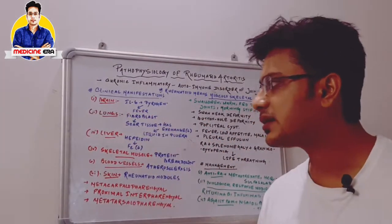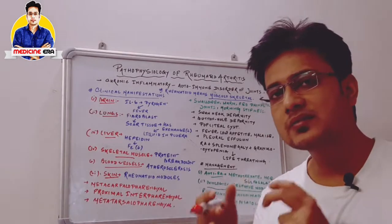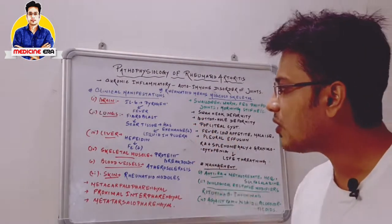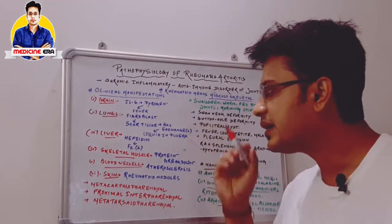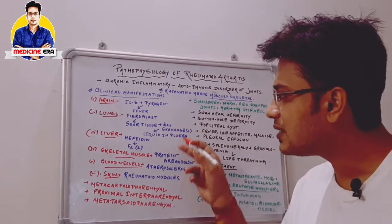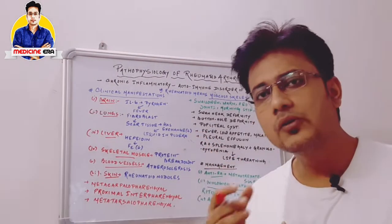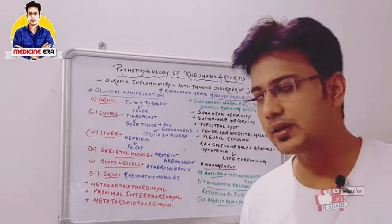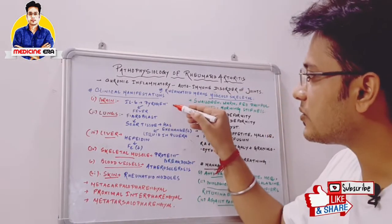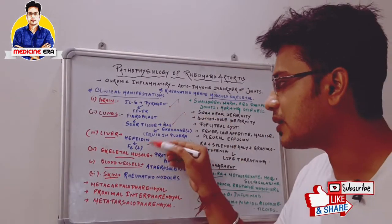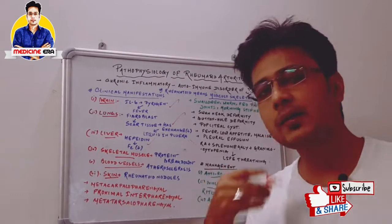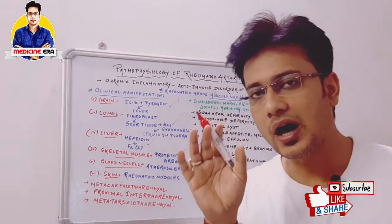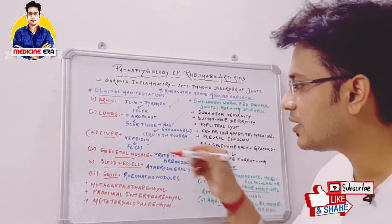In case of lungs, it causes fibroblast formation — meaning scar tissue formation — which decreases gaseous exchange and causes accumulation of liquid in the pleural cavity, called pleural effusion. In case of the liver, it causes hepcidin formation, which decreases absorption of iron molecules.